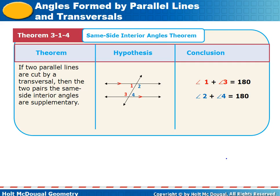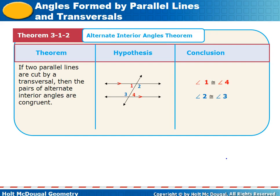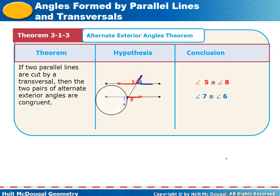The alternate exterior angles theorem states: if two parallel lines are cut by a transversal, then the two pairs of alternate exterior angles are congruent. Angles five and eight are on alternate sides of the transversal and outside the parallel lines. Angles six and seven are also on alternate sides and outside the parallel lines. These alternate exterior angles are congruent.